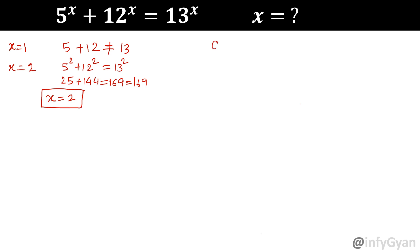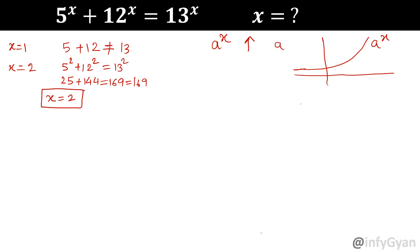Now consider a to the power x. If you check the graph of a to the power x, it looks like this — it is a monotonic increasing function. This is point number 1: when a is greater than 1. You can think in your mind: 2 raised to the power infinity, 3 raised to the power infinity — that value will be infinity, because you are multiplying 3 times and 3 times like that.